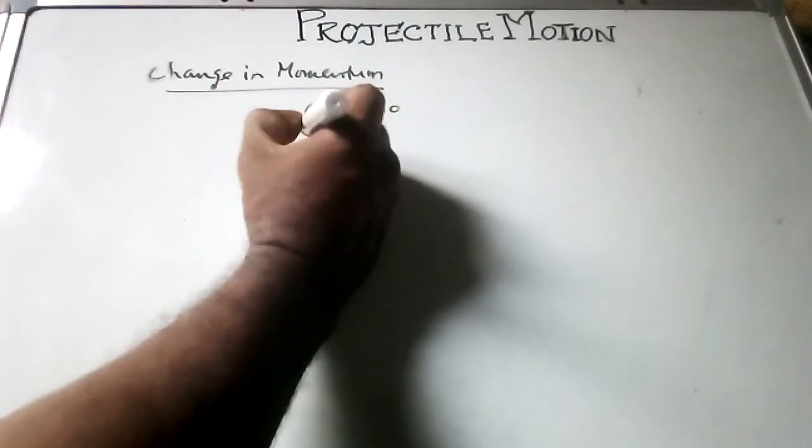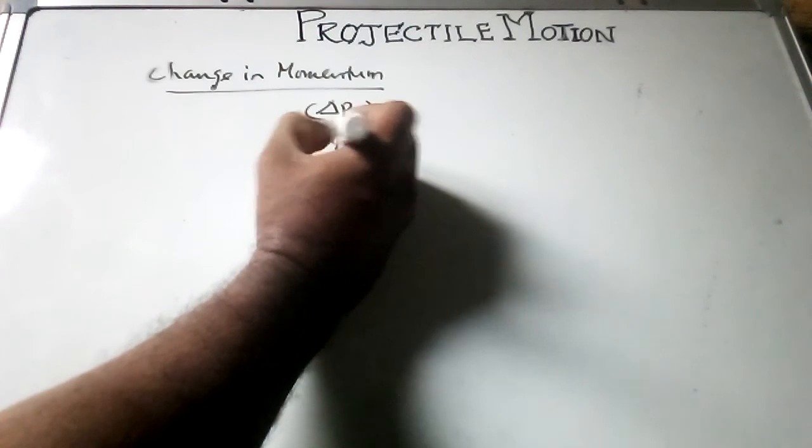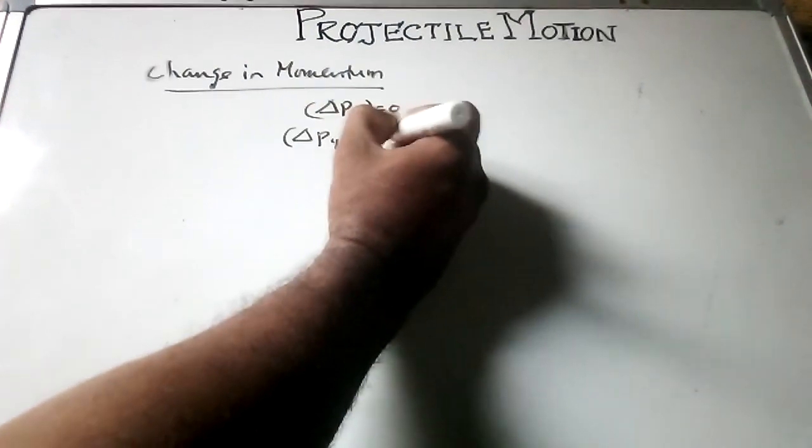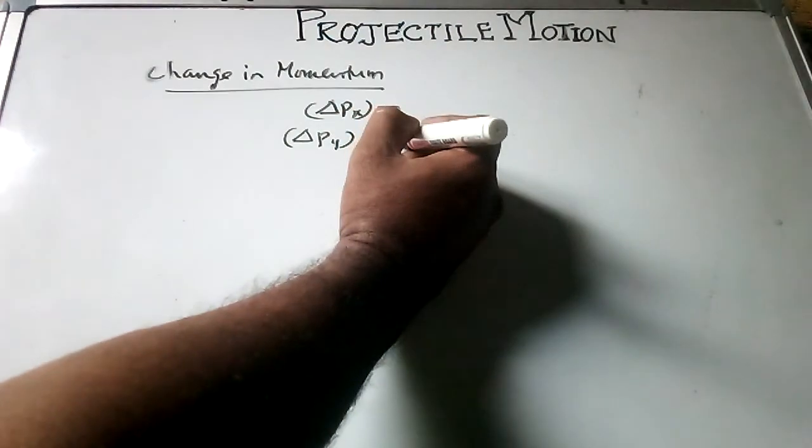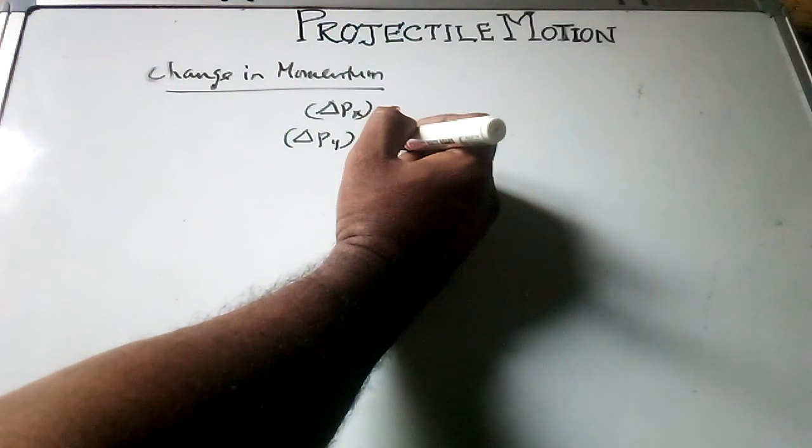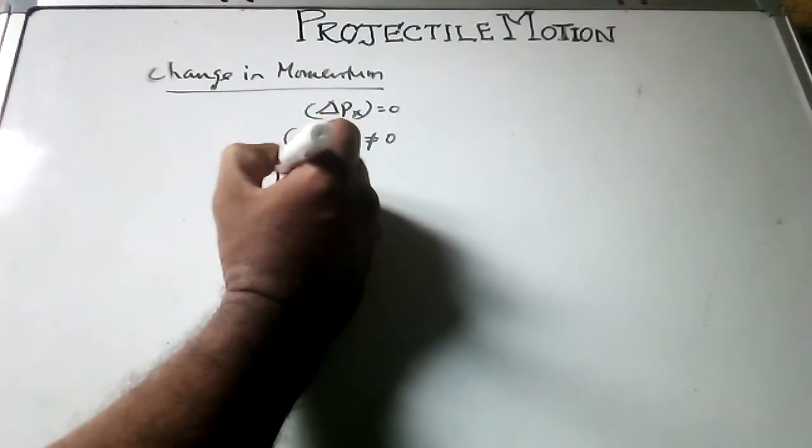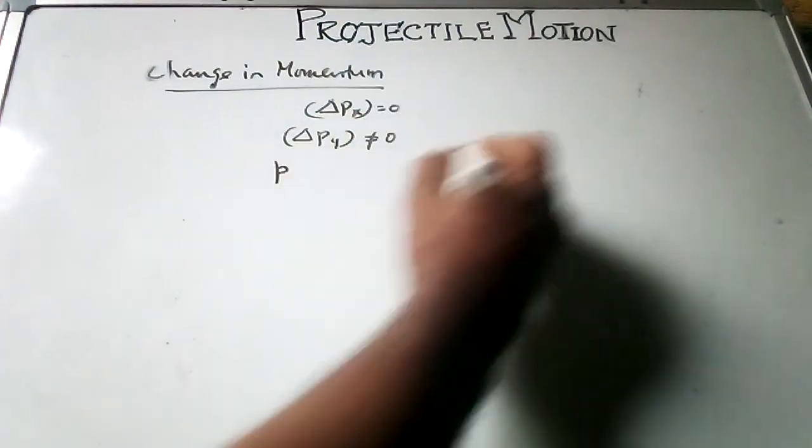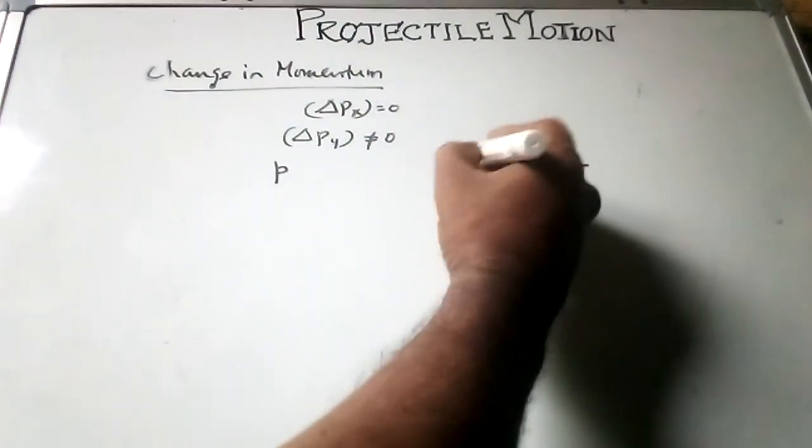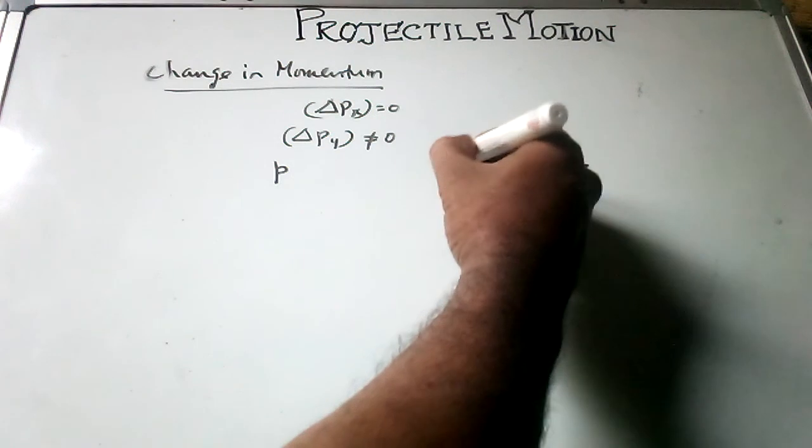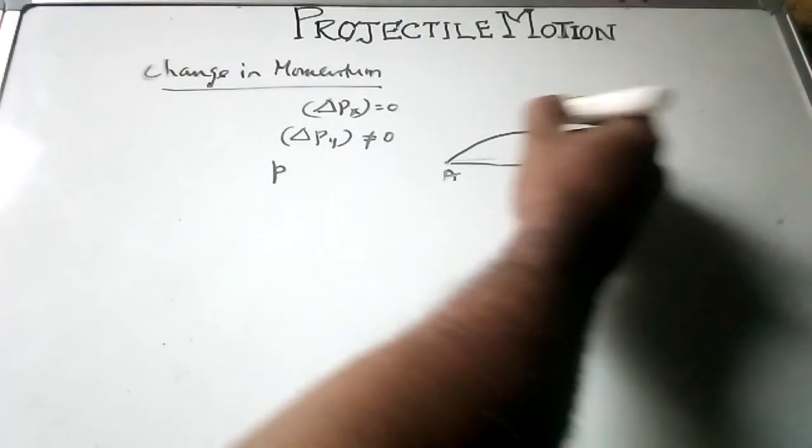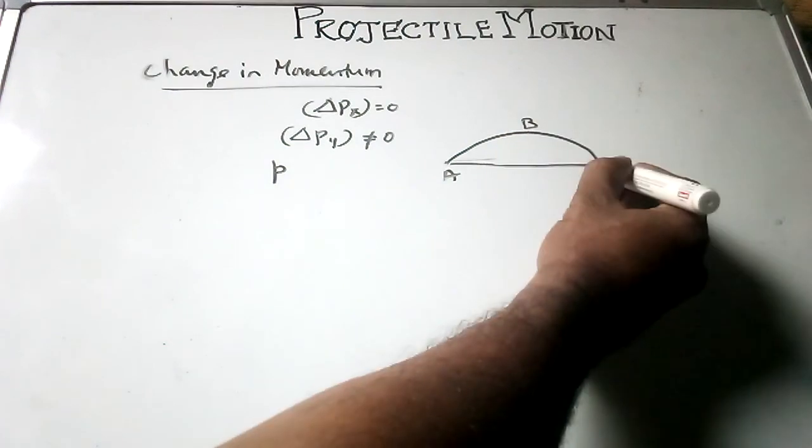But in y-direction, velocity changes. Del py is not equal to 0. So let us write the momentum at different positions at A. Consider the figure. The trajectory is projected from point A and reaches point C through B.